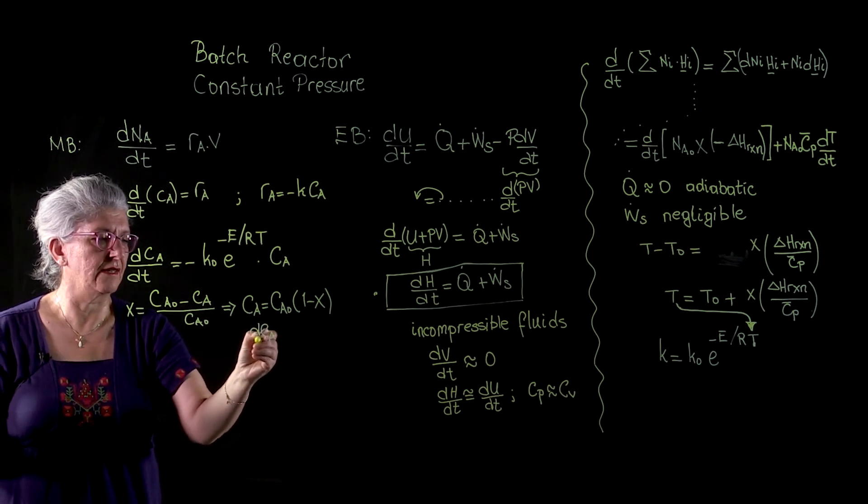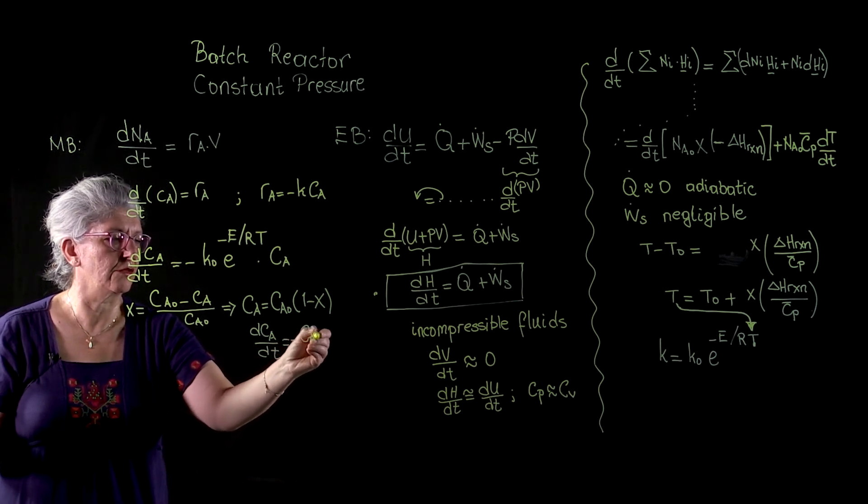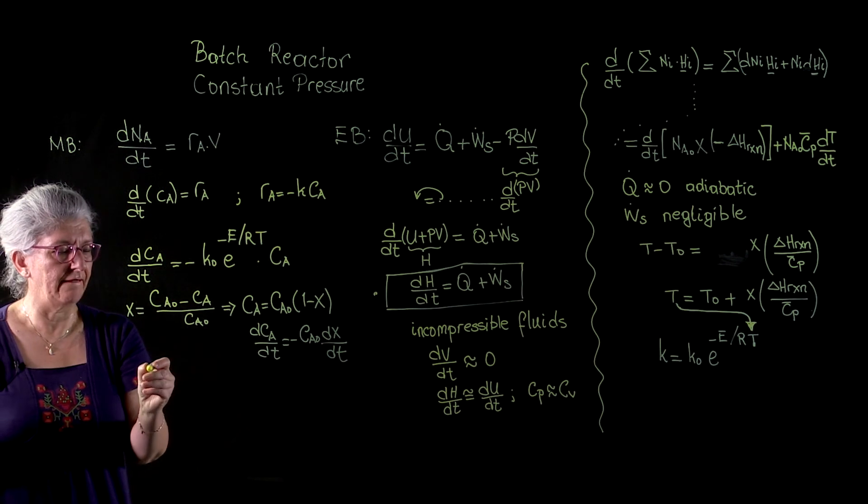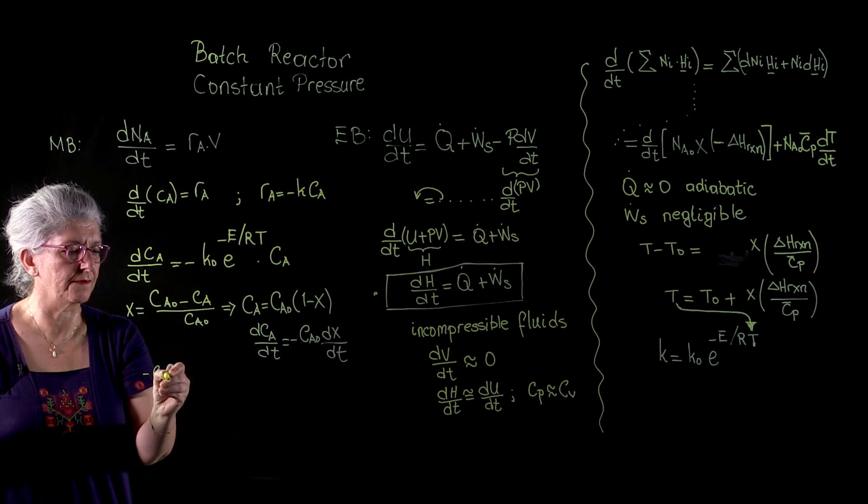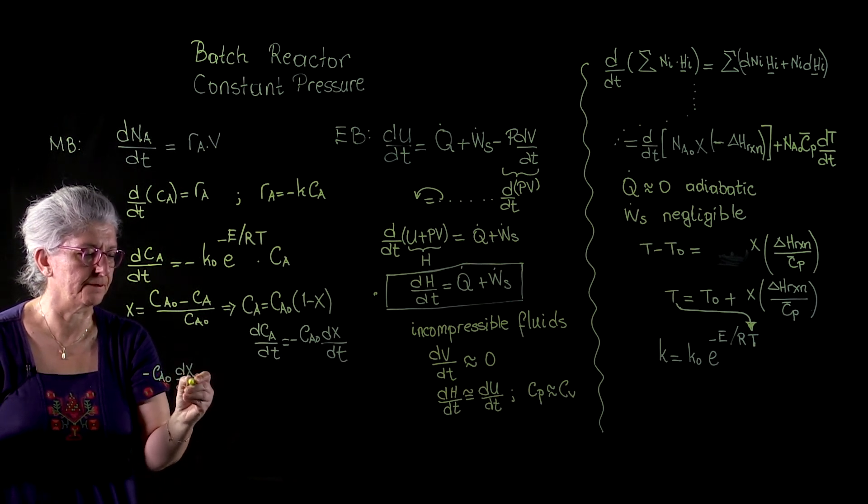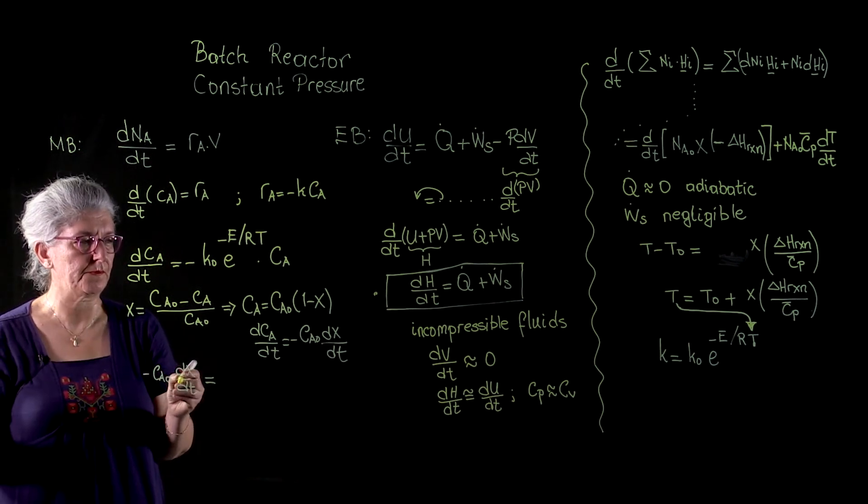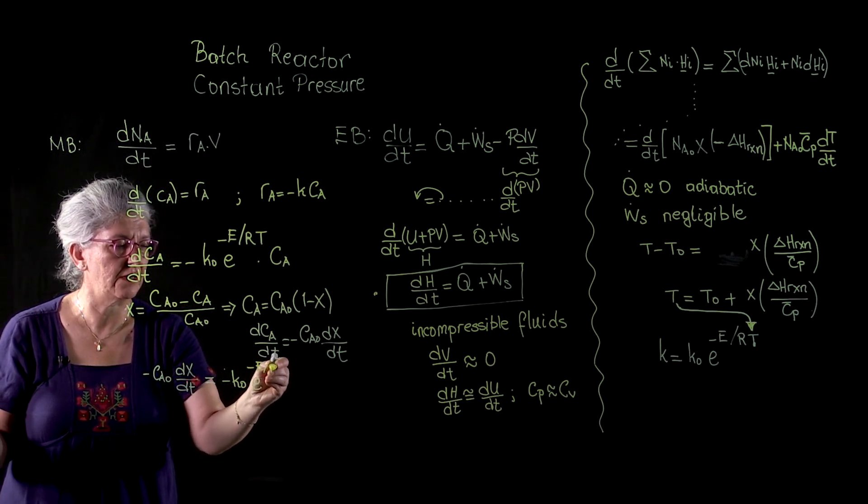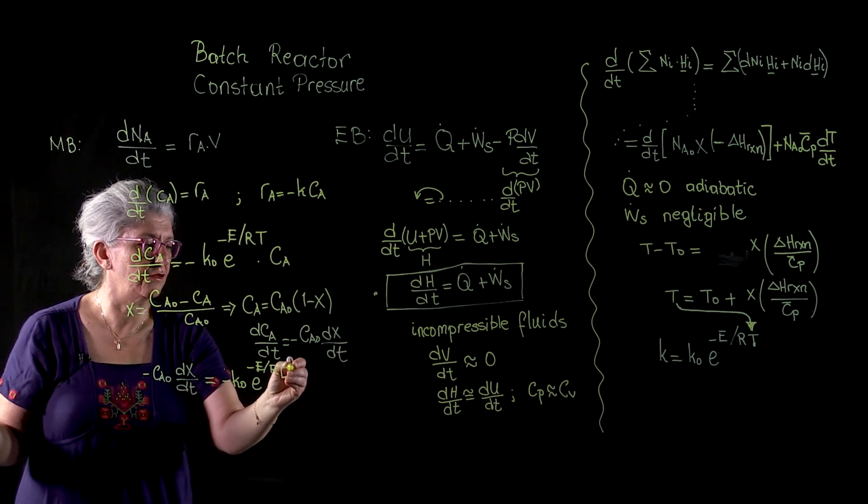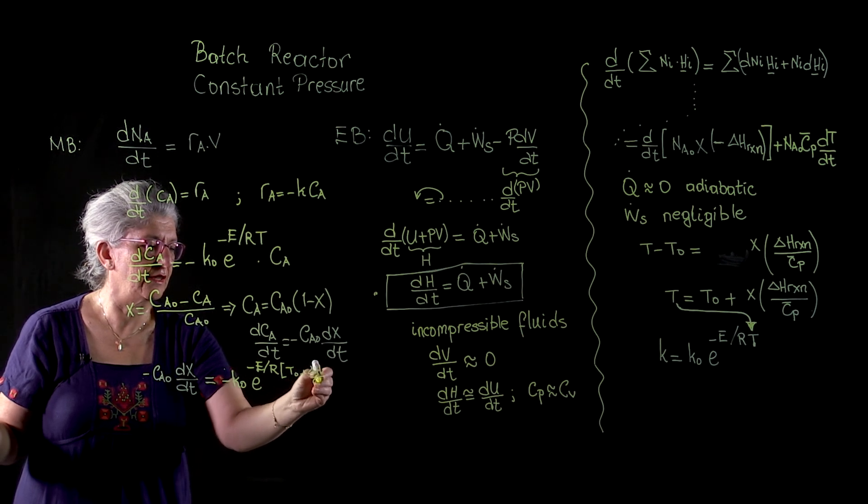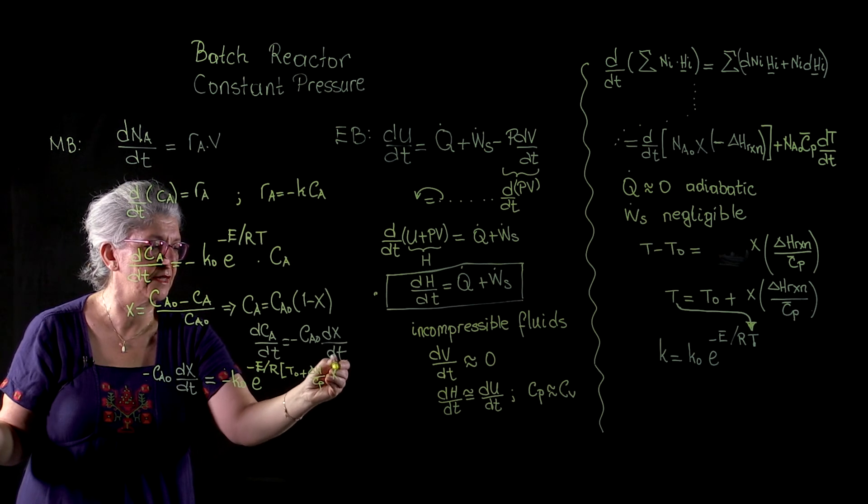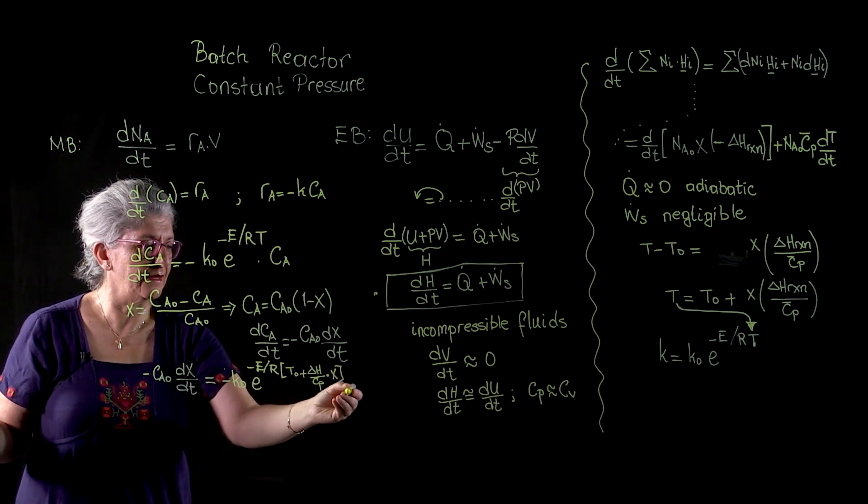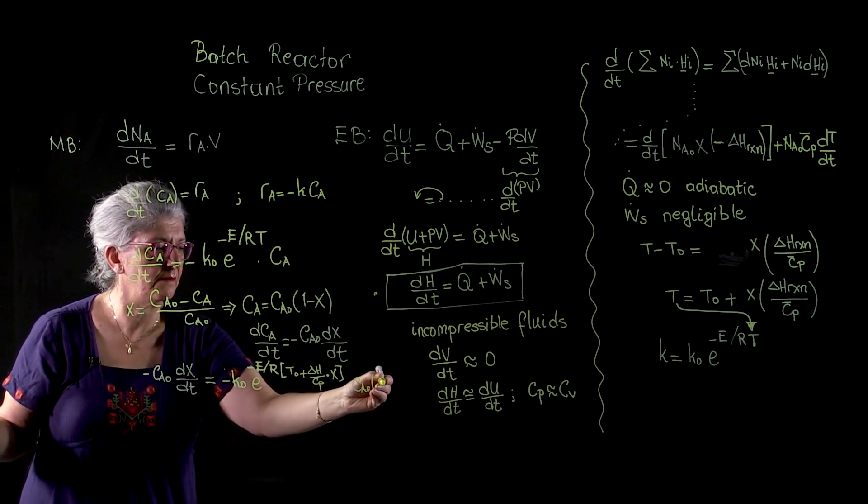dCA/dt is equal to CA0 d(1 minus x)/dt, such that we have minus CA0 d(1 minus x)/dt is equal to minus k, k0 times e to the minus E over R times T, T is equal to T0 plus delta H over Cp mean feed heat capacity times x. Now, instead of a temperature variable, we have a conversion variable in the Arrhenius form times CA0 times (1 minus x).